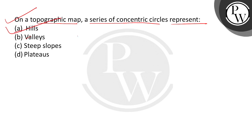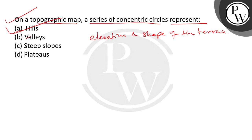Topographic map — contour lines are used to represent the elevation and shape of the terrain. So closed lines forming concentric circles represent hills.